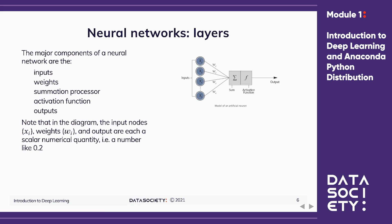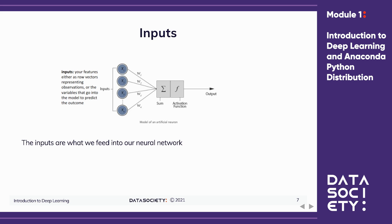The inputs are what we feed into our neural network. These are often drawn as nodes — on the graphic, these are the blue circles you see on the left-hand side. These nodes either represent features or observations. If we input our features, we'd have one node for every feature in our dataset, so if we had 100 features, we'd have 100 nodes. Alternatively, we could have one node for every row or observation in the dataset.